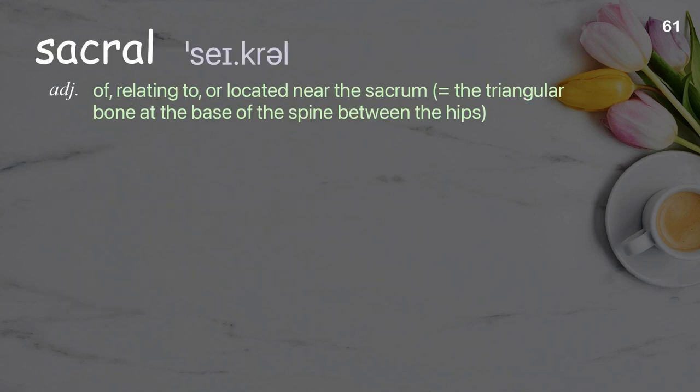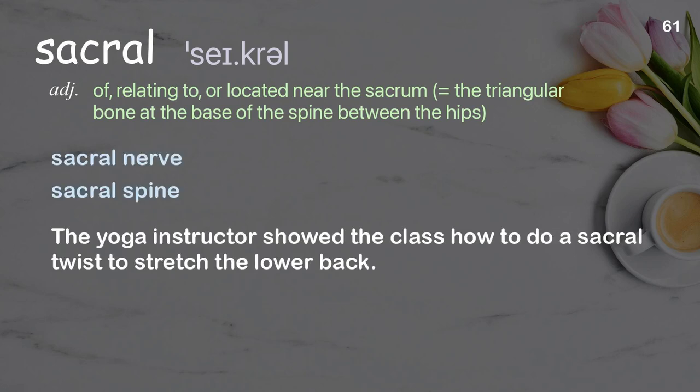Sacral: of, relating to, or located near the sacrum, the triangular bone at the base of the spine between the hips. The yoga instructor showed the class how to do a sacral twist to stretch the lower back.